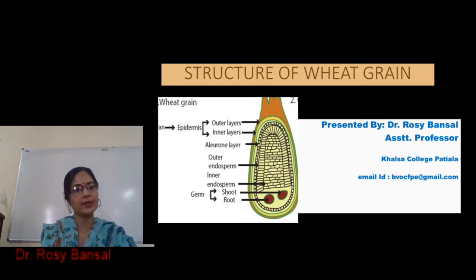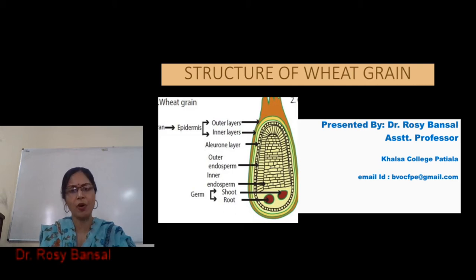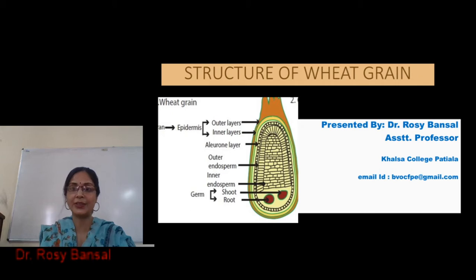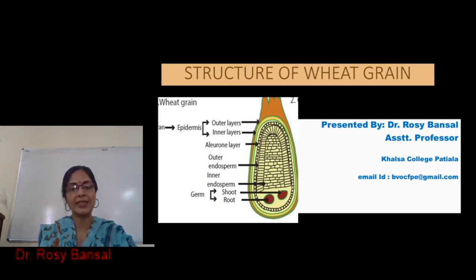Wheat grain consists of three major parts. If you look at the grain from the outer layers — have you ever seen a wheat grain? What is unique about this grain? This wheat grain is very unique because it has a central crease in the center of its structure, which makes it unique.